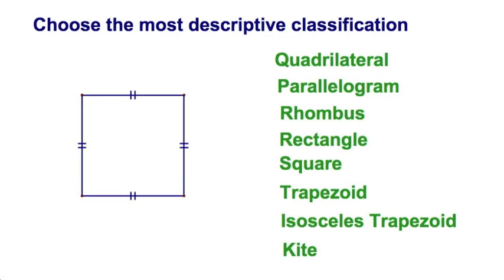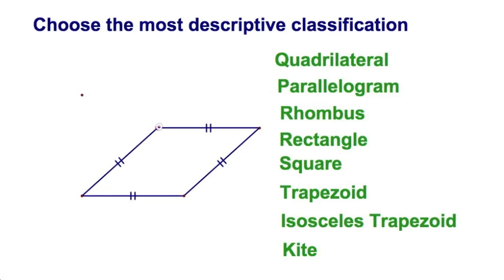Here we go with four congruent sides. Four congruent sides, but nobody said anything about the angles. What would that be? Well, that can only be a rhombus.